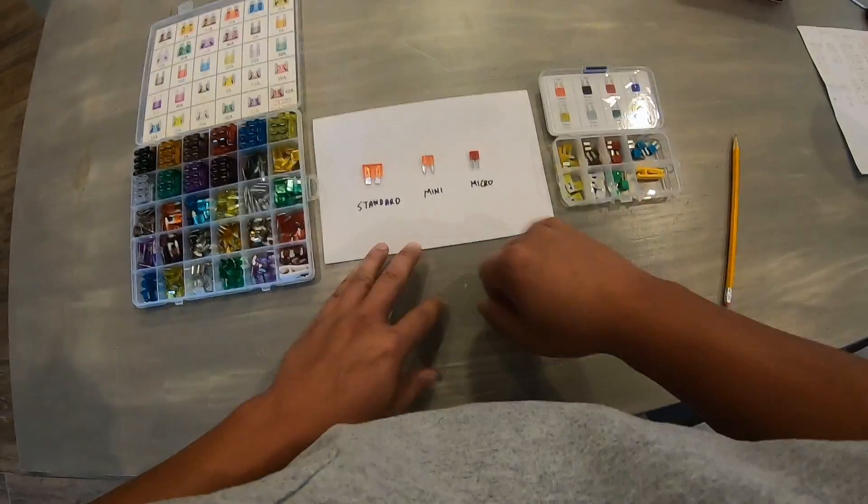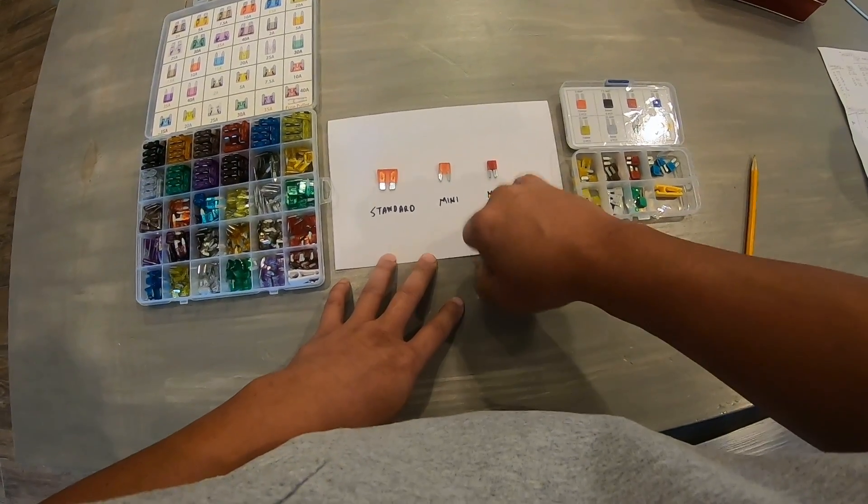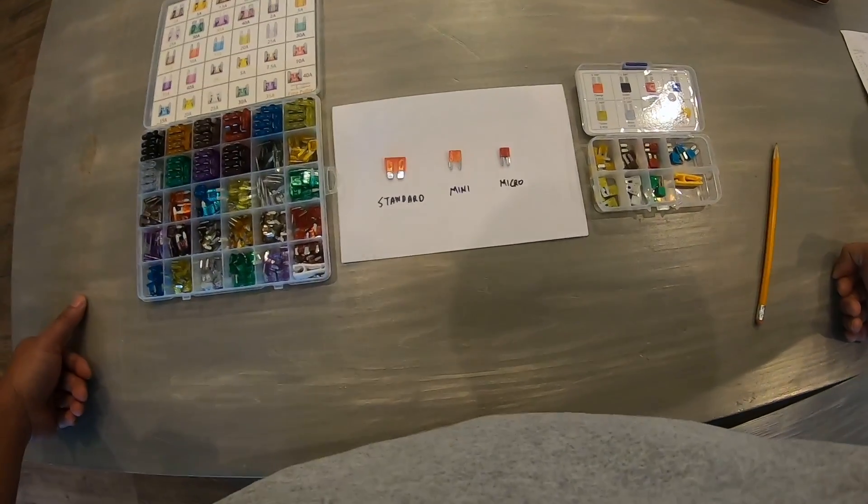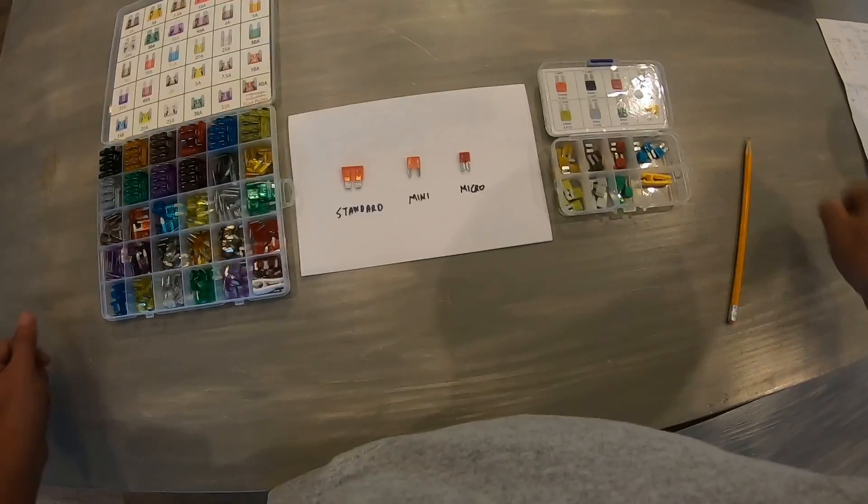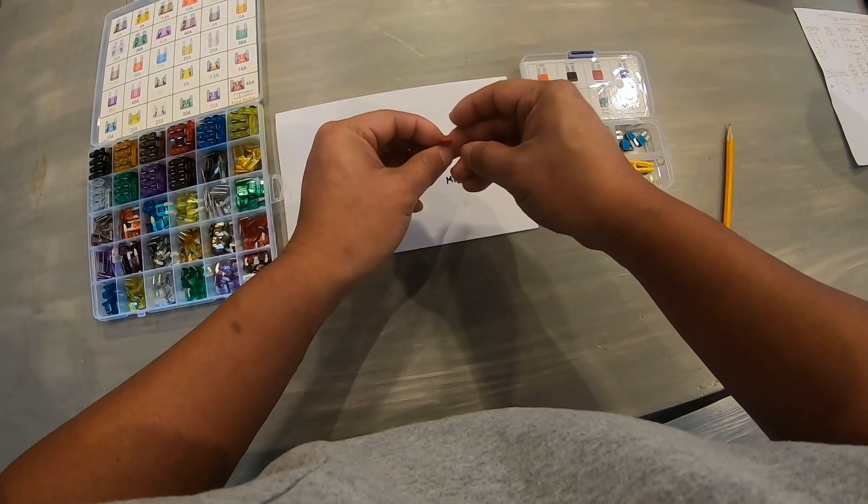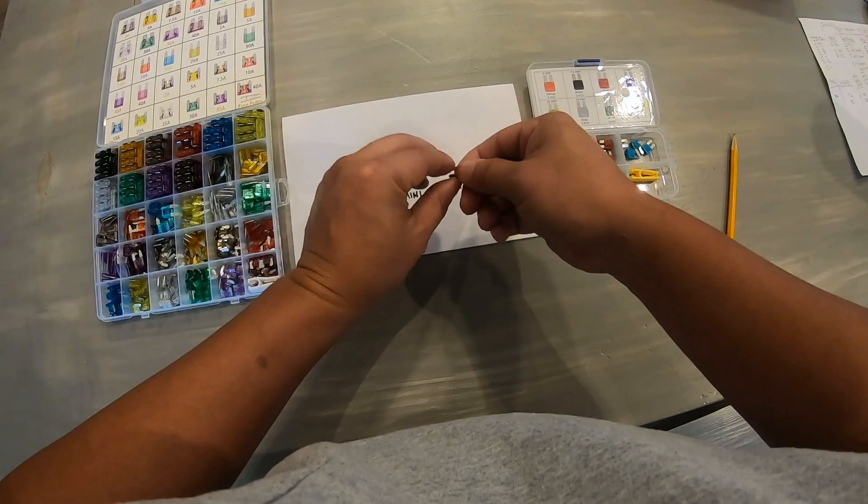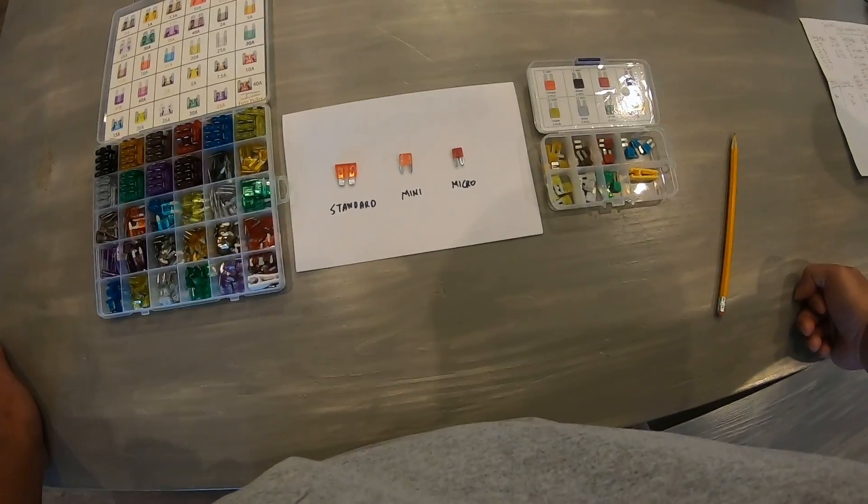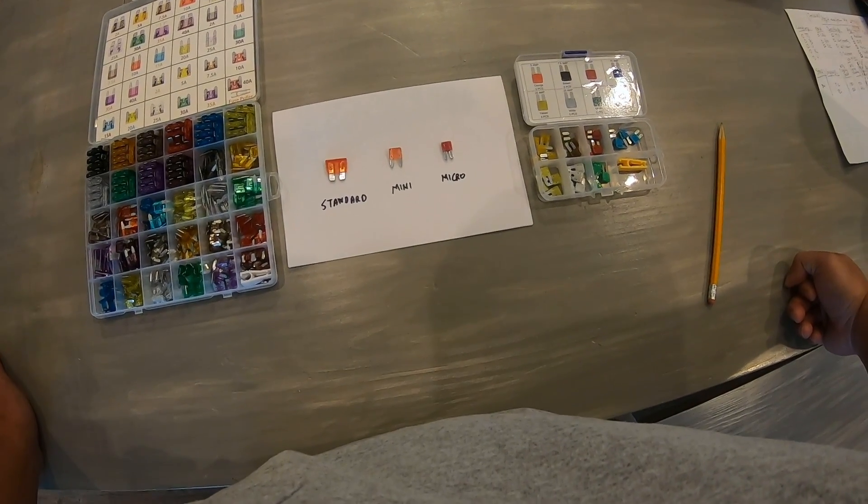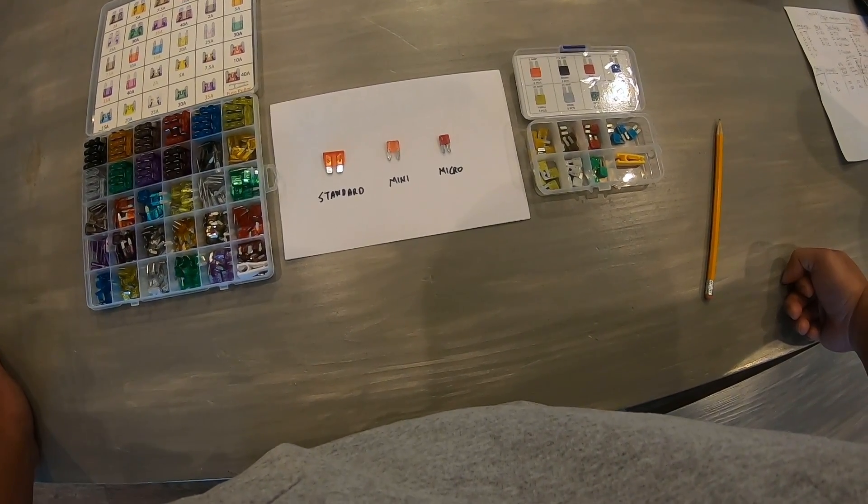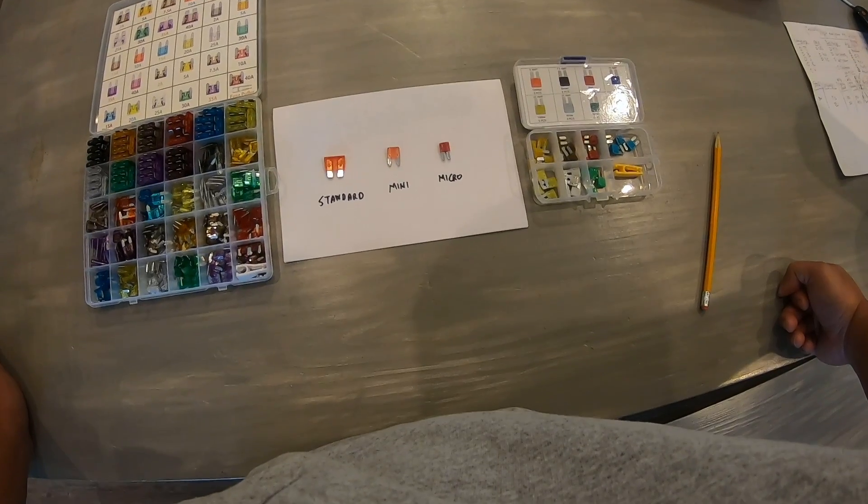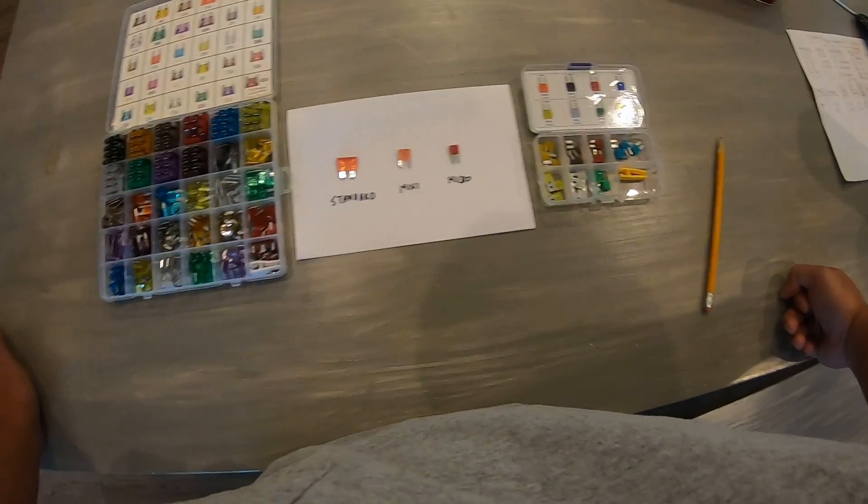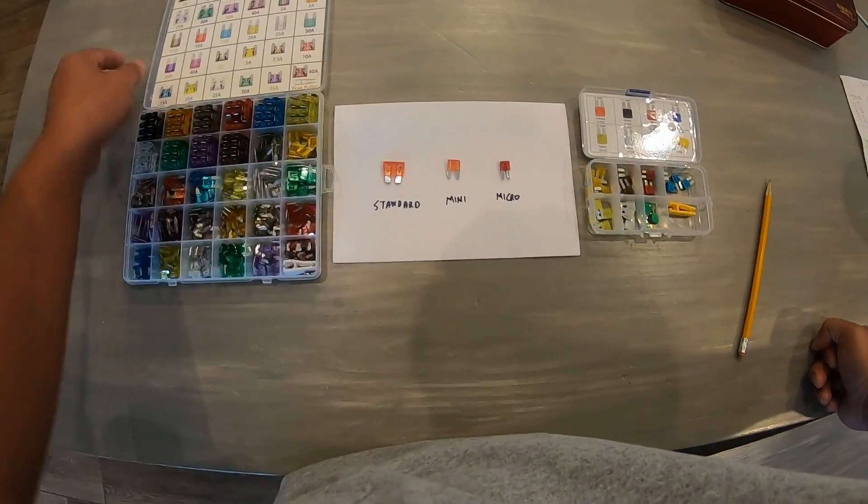And starting about 2010 they started to use the micro size fuse. The micro right now is still what is mostly being used for newer vehicles, cars and trucks. The micro comes with pretty much all the sizes also, all the way to 20, 30 amp even.